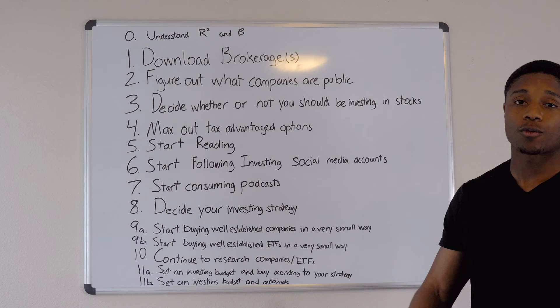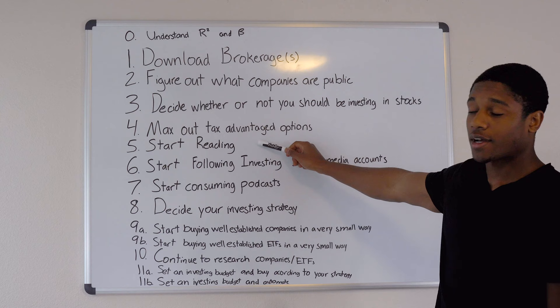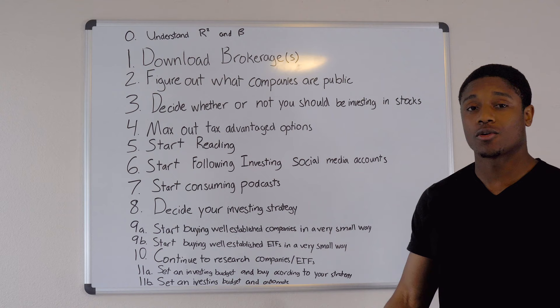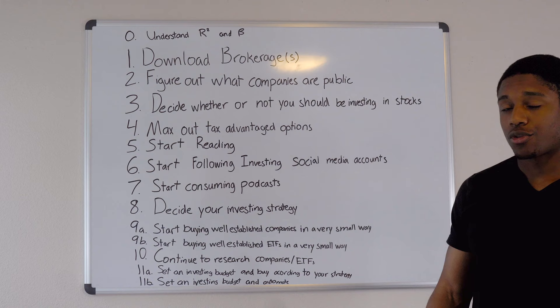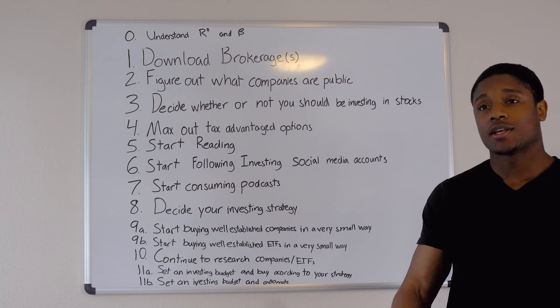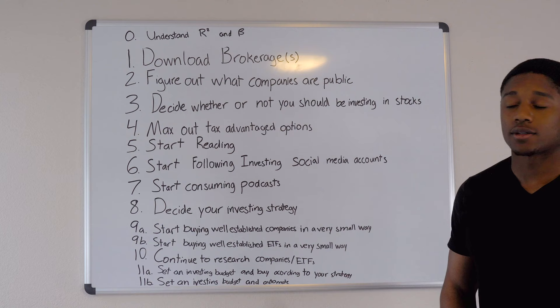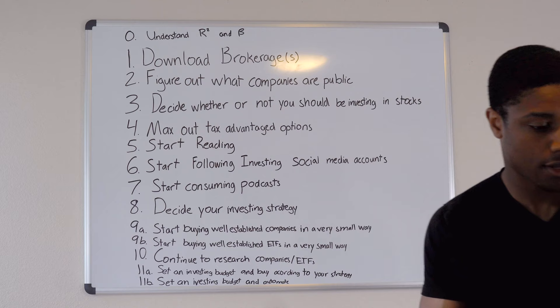Number five: start reading. The reason reading comes after maxing out tax-advantaged options is that when you're contributing to employer plans, you don't need to know much about what's going in — just find something with low fees and get started. Once you've done that, it's time to start reading. I have some books here to recommend.